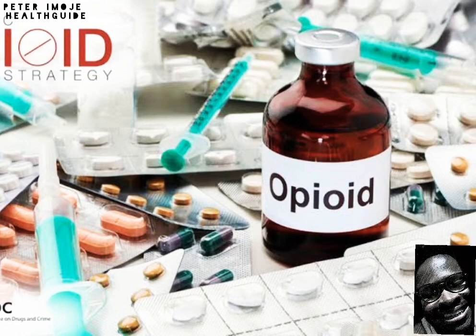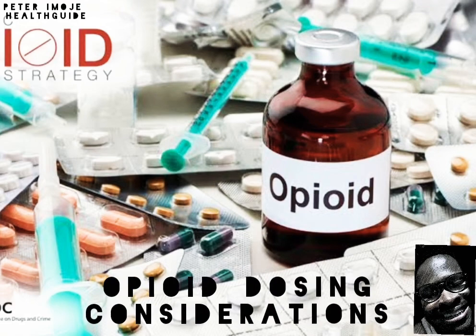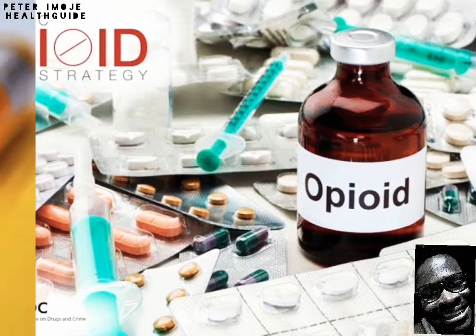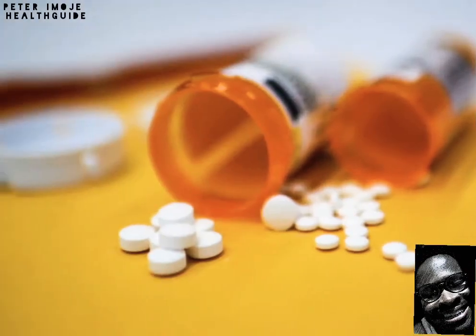Opioid dosing considerations to take note of. For chronic pain, opioids should be prescribed on both an around-the-clock basis — that is, four-hourly short-acting morphine, hydromorphone, and oxycodone — and a one-hour PRN basis for breakthrough pain. The breakthrough opioid dosage is approximately 10% of the 24-hour dosage, reassessed often, at least weekly.